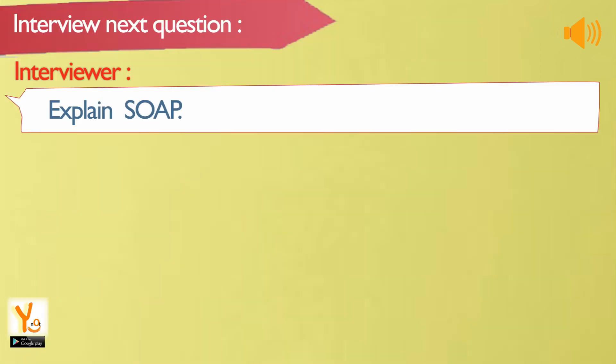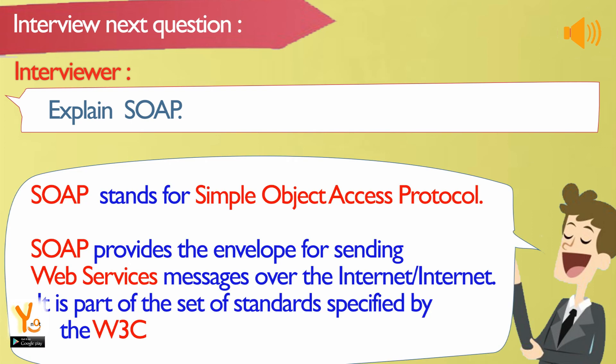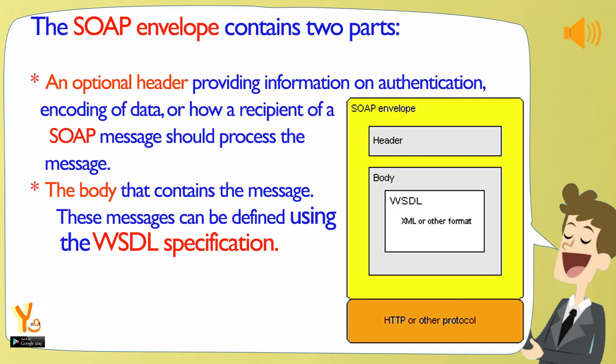Explain SOAP. SOAP stands for Simple Object Access Protocol. SOAP provides the envelope for sending web services messages over the internet and is part of the set of standards specified by the W3C. The SOAP envelope contains two parts: an optional header providing information on authentication, encoding of data, or how a recipient should process the message; and the body that contains the message. These messages can be defined using the WSDL specification.